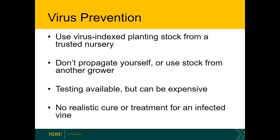What can you do to prevent a virus? Because with viruses, we're really just trying to prevent them. Once you have a virus, you're going to probably think about removing that plant and replacing it rather than treating it. High quality planting stocks should have had a virus indexing program certifying them as virus-free, which goes a long way. Likewise, don't propagate new plant tissue yourself or use stock from a friend or another grower where you don't know the history of that plant. That will help prevent viruses.